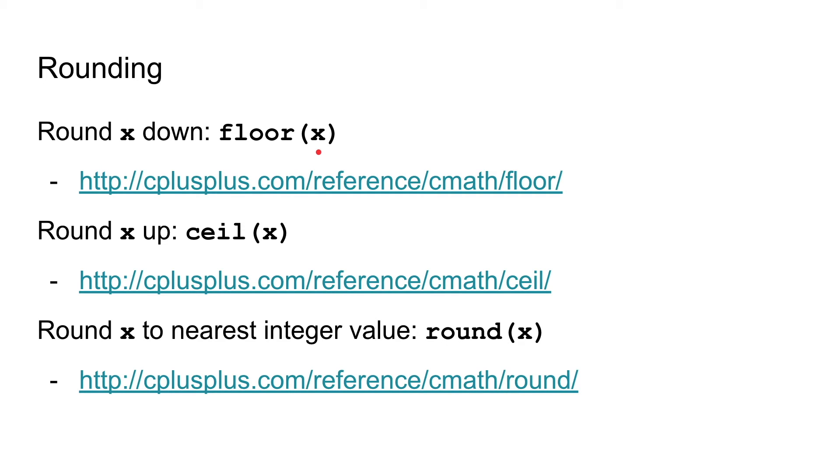The ceil, on the other hand, rounds up any number or equation. If you have 12.9, it will round up to 13. If you have 12.5, it will round up to 13. If you have 12.1, it will round up to 13.